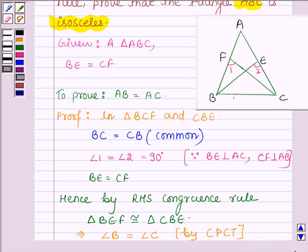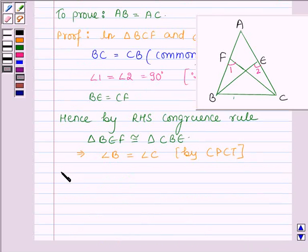That is, corresponding parts of congruent triangles are equal. Now, in triangle ABC, we have angle B is equal to angle C.